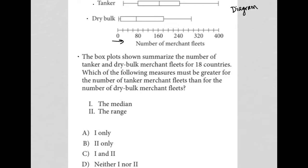The question says, the box plots shown summarize the number of tanker and dry bulk merchant fleets for 18 countries. So all this information here is for 18 countries of the number of tankers they all have, and this is for the dry bulk fleets for those 18 countries as well.